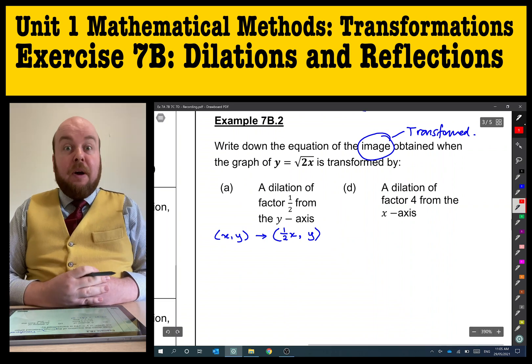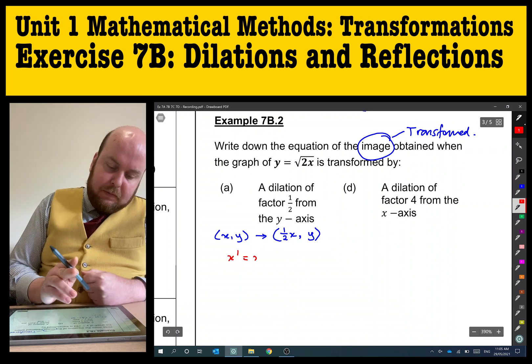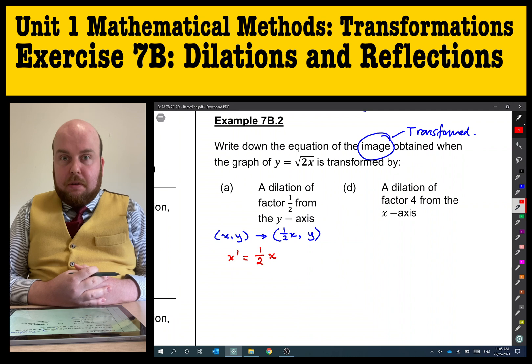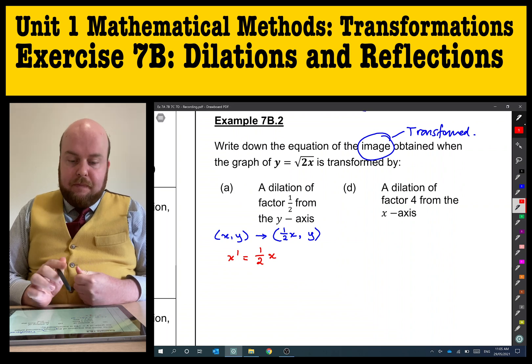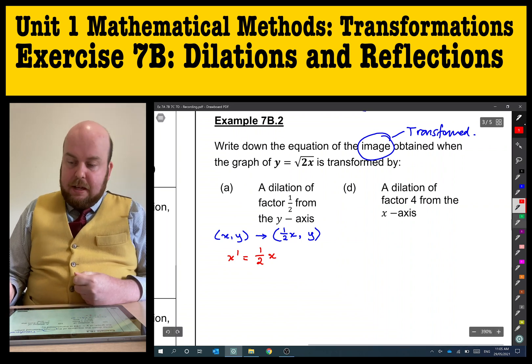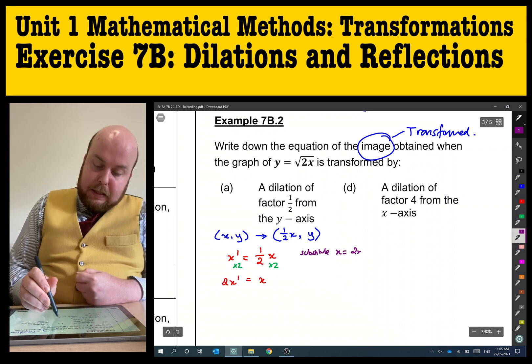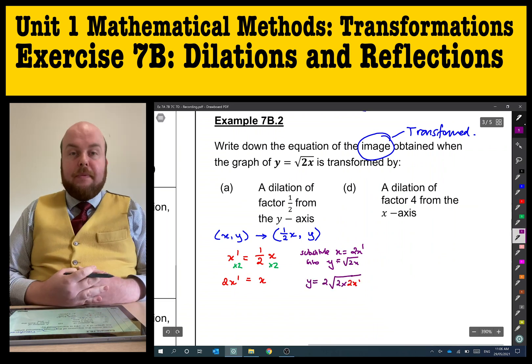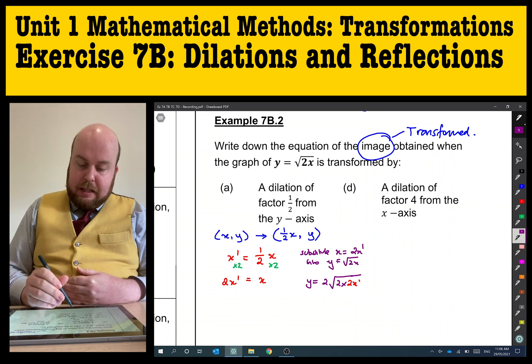Much like you might remember from our examples from 7a, I'm going to make a transformation statement. The transformed x is going to equal 1/2 of the original. What we want to do is substitute accordingly into the original equation. I'm going to multiply both sides by 2 or divide by a half and then substitute. Every time I've seen x, I've just replaced it with the transformed version.